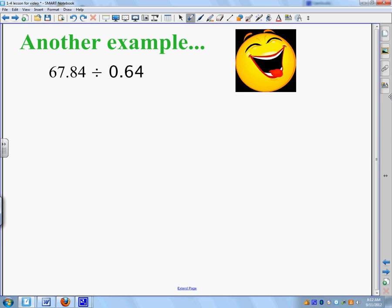Here is another example. If you want to, you can push pause, try it on your own, and then come back. Or, you can follow along with me again. So, I'm going to put 0.64 on the outside of my division problem. I'm going to have my division bar, and then I have 67.84 goes on the inside.